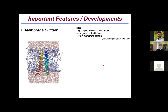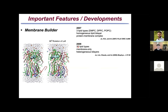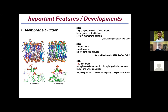I will start with some membrane builder stuff. Just to give you a history: in 2007 we actually released our first membrane builder with three lipid types. At that time, we only supported homogeneous lipid bilayers and protein-membrane complexes. In 2009, in collaboration with Jeff Klauda, we expanded membrane builder to have 35 lipid types, and we started to support membrane-only systems and heterogeneous bilayers.